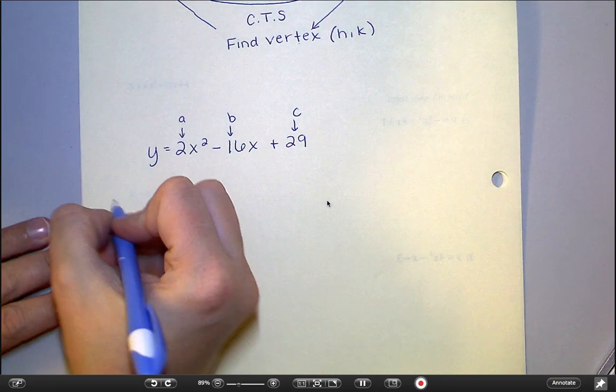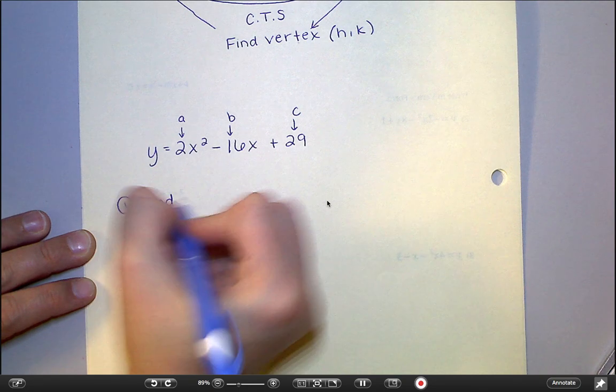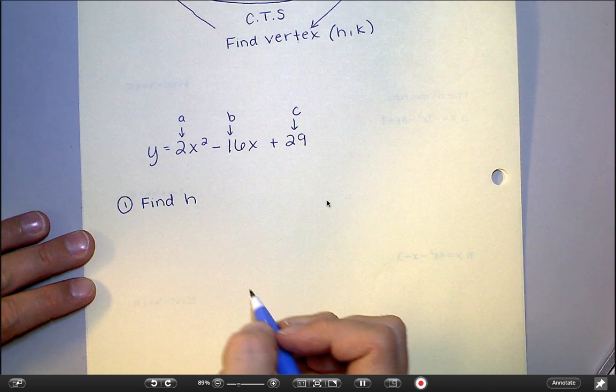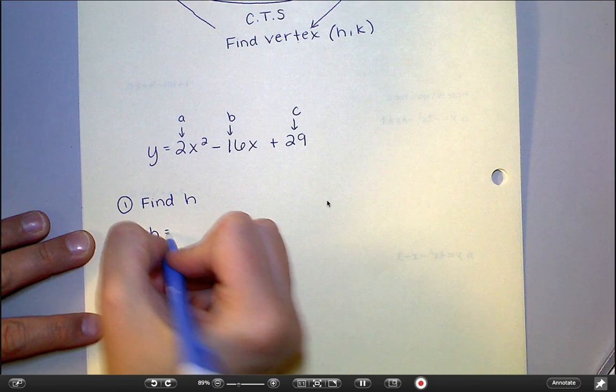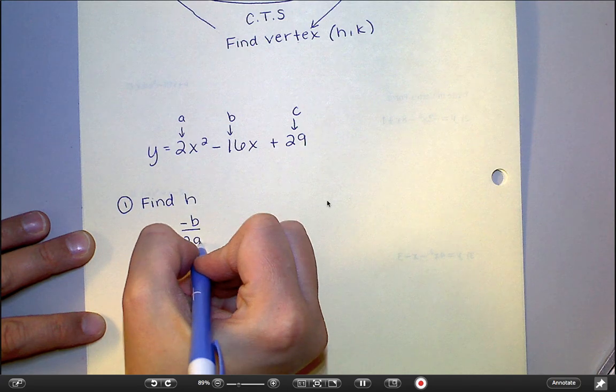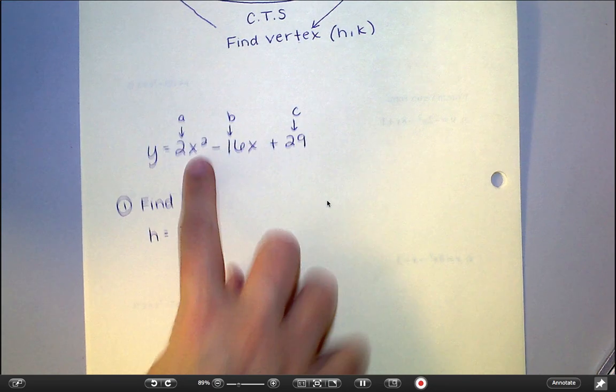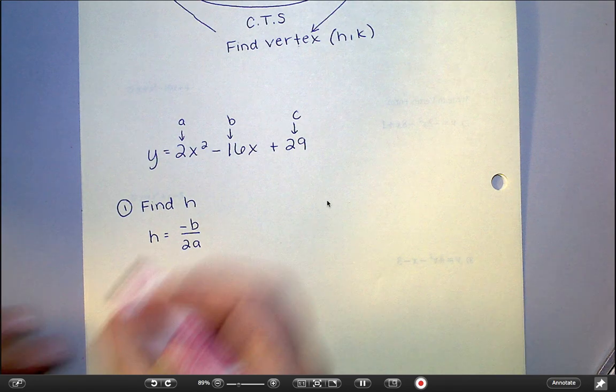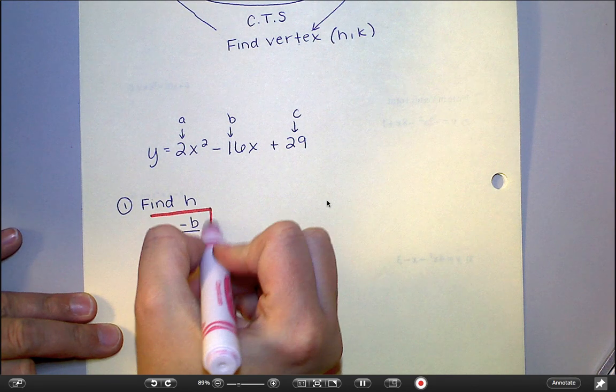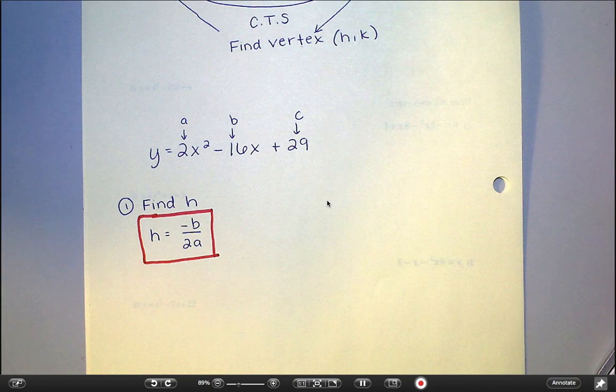So your first step is always just to find h. And h has its own little formula. It looks like this. Negative b over 2a. Negative b over 2a is how you can find your h value. And when I'm talking about b and a, I'm talking about these numbers up here. And I'm going to go ahead and highlight this, because this is the only, like, new piece of information you really need today. This is the new concept, is that I can find h by doing this.